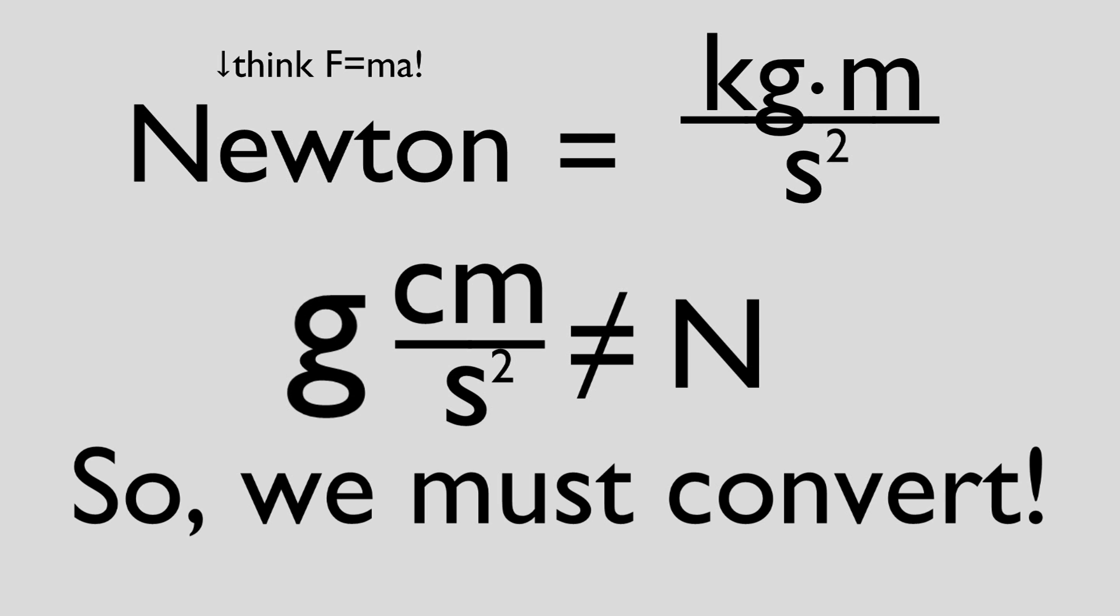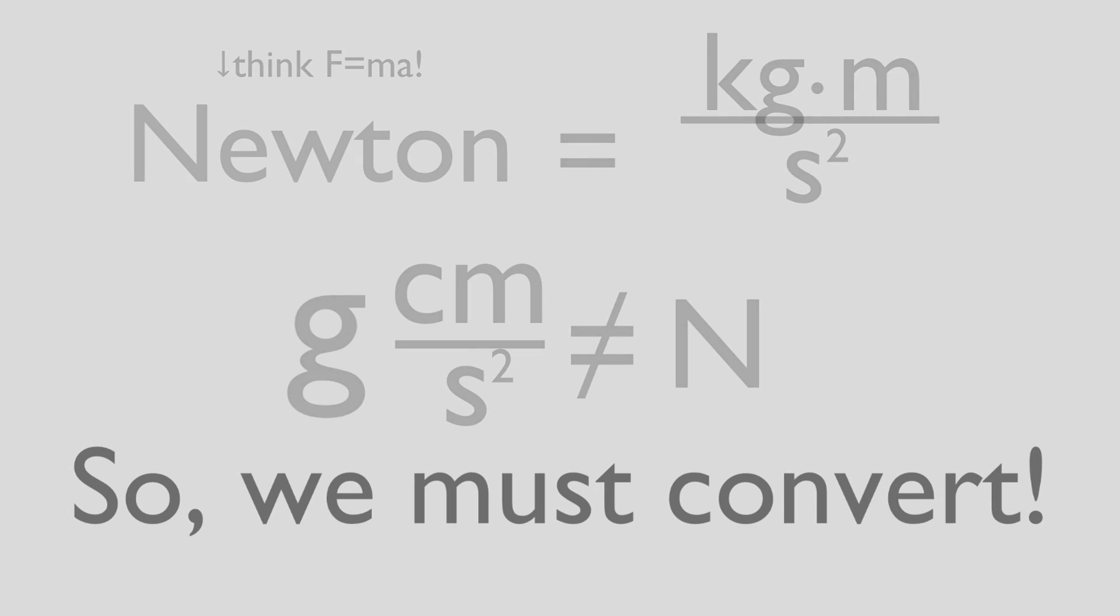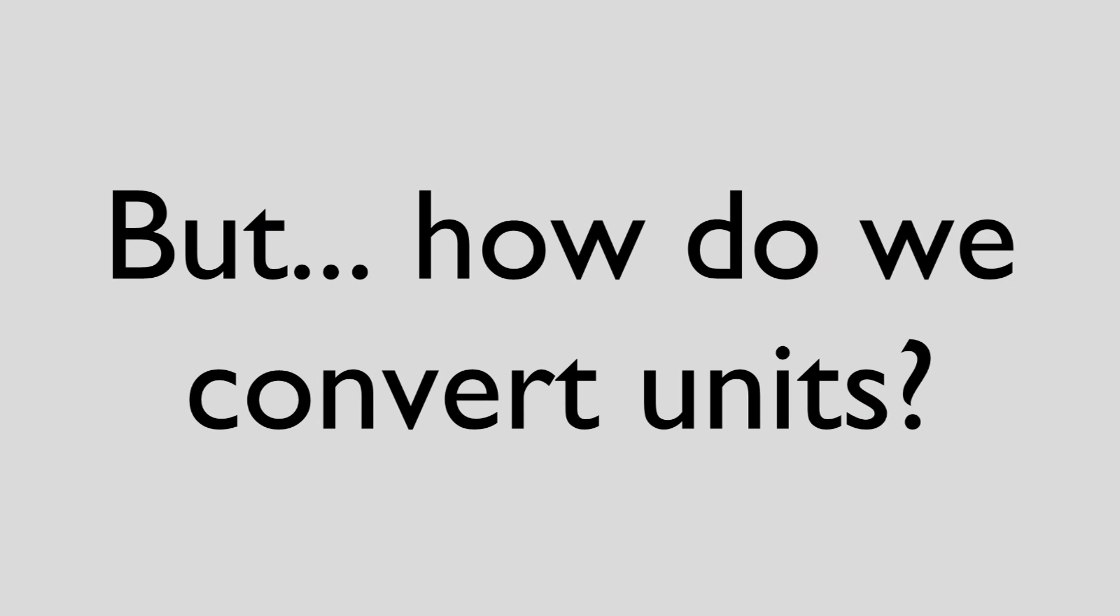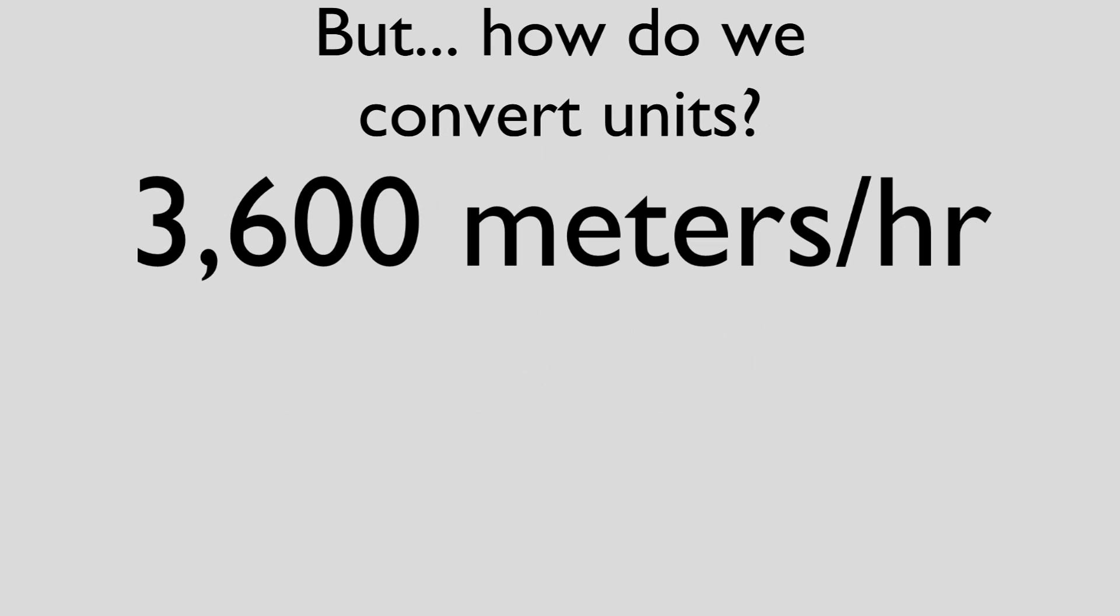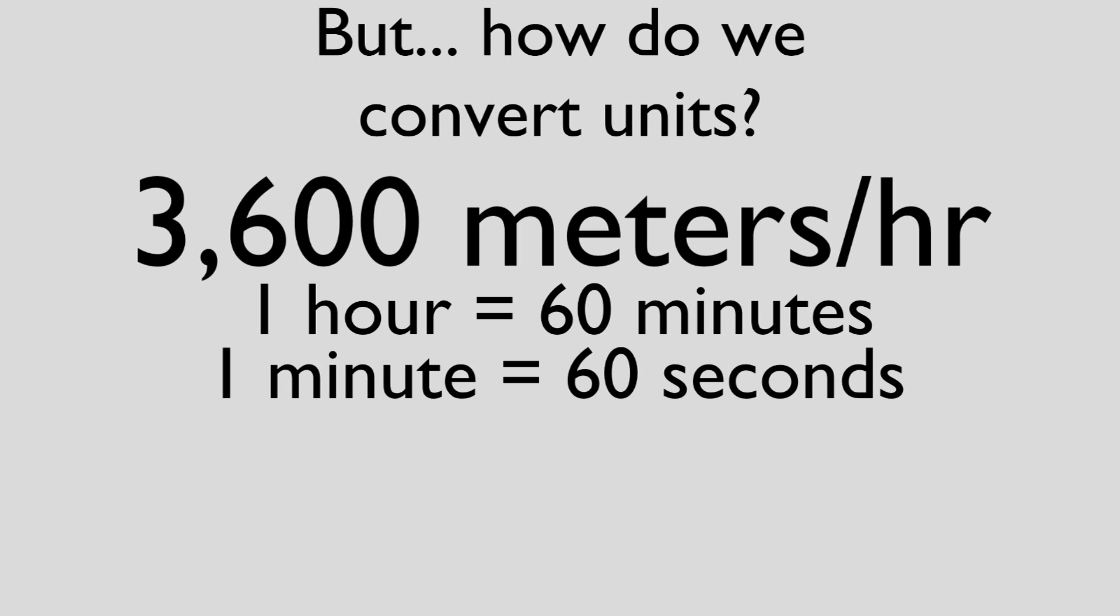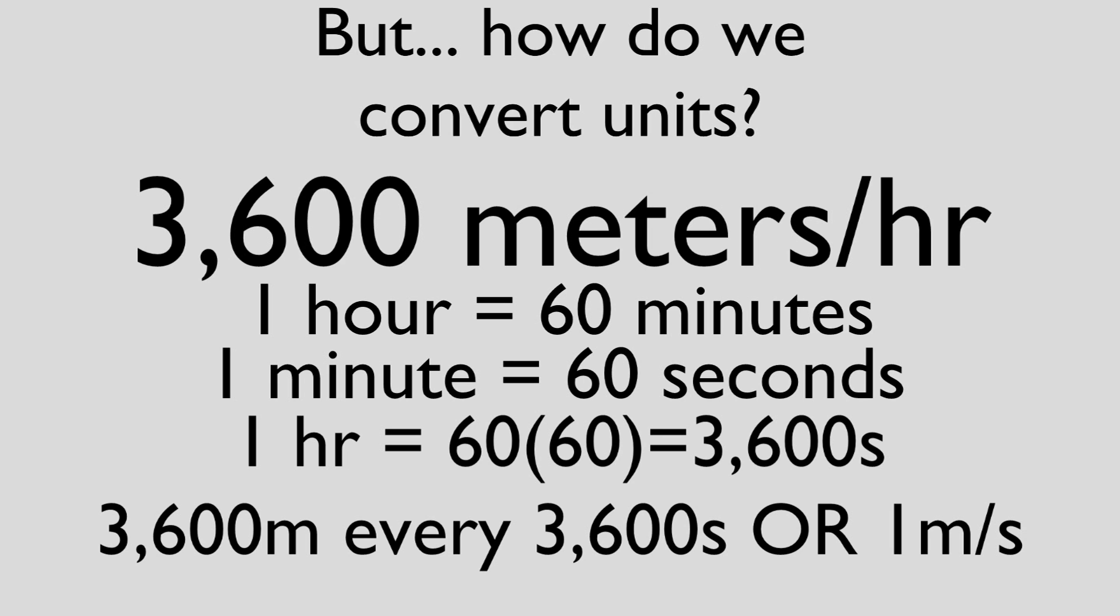Because of this, we often have to convert units that were given to the respective standard units before we begin a problem. Now, a lot of conversions can usually be done in our head. For example, if I told you that something was moving at 3600 meters per hour, you could just multiply 60 minutes times 60 seconds to get 3600 meters per 3600 seconds or 1 meter per second.